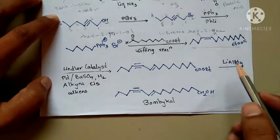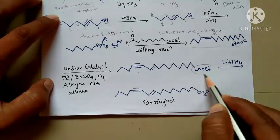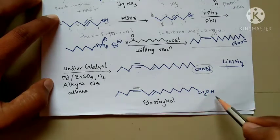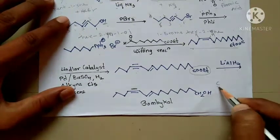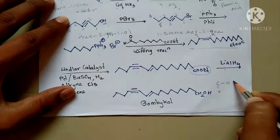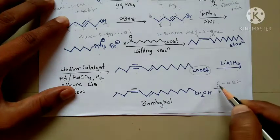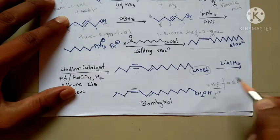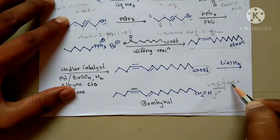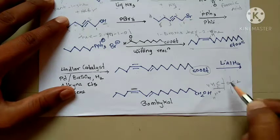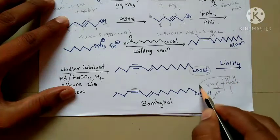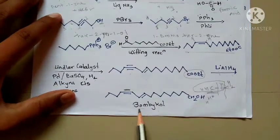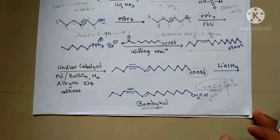The lithium aluminium hydride converts the ethyl acetate group into CH₂OH. We add two hydrogens across the double bond giving CH₂, and across the OAc bond we add hydrogen, so the ester group is totally converted into CH₂OH. So this is the bombycol synthesis.